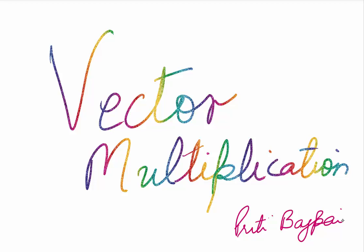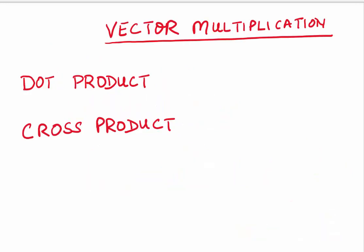Hi everyone. Welcome to today's topic: Vector Multiplication. Vectors are multiplied in two ways: the dot product and the cross product. For dot product we use a dot, and for cross product we use a cross between the two vectors.